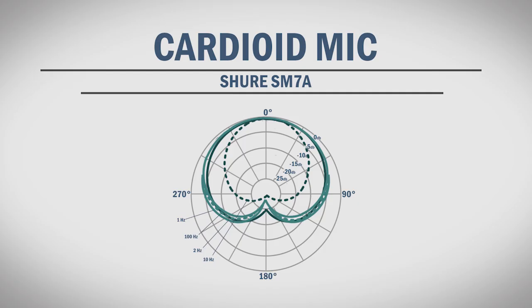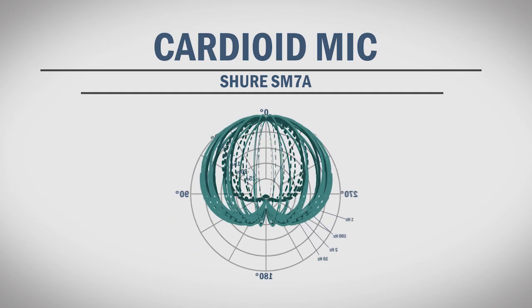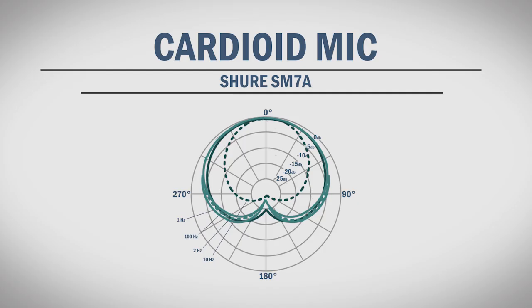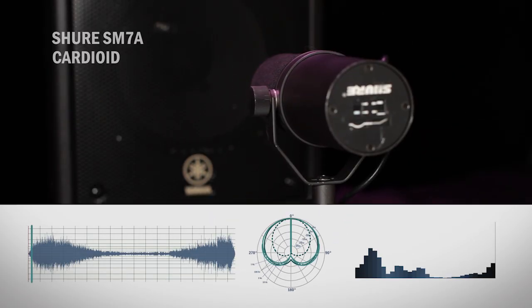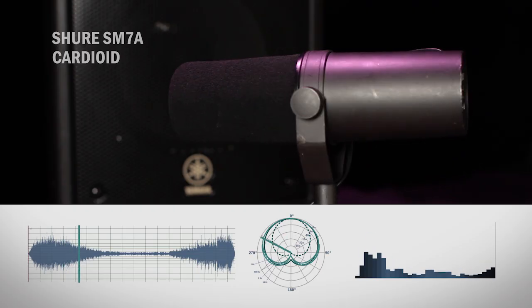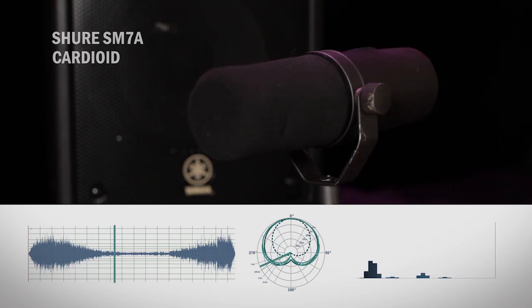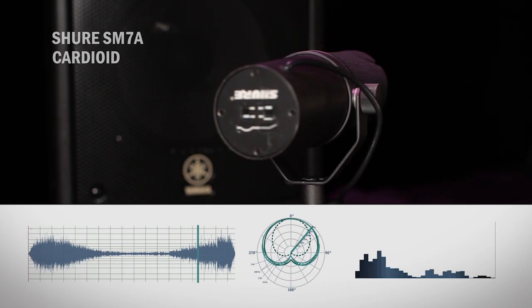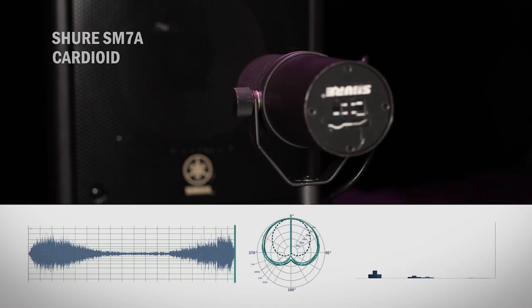The cardioid pickup pattern got its name from its heart-shaped appearance. It's designed to pick up sound from the front of the diaphragm and reject sound from the back. This is the polar pattern for the Shure SM7A. You can see that the cardioid pattern picks up mostly from the front of the mic while rejecting most of the sound from the back and sides. Notice that this is a bit more sensitive to some lower frequencies from the back. Just as the polar pattern indicated, you heard a significant output fall off as we turned toward the side and back of the mic.